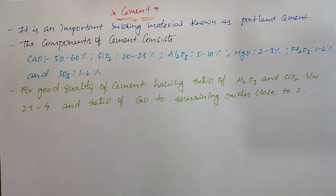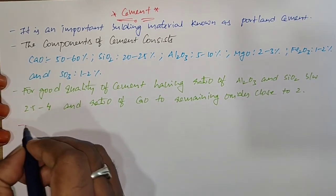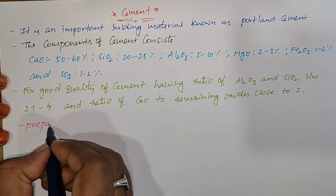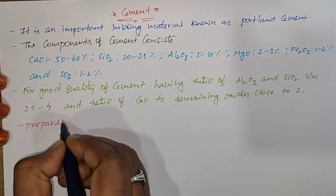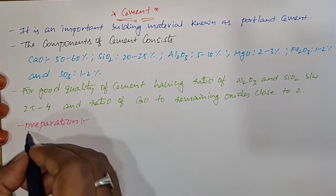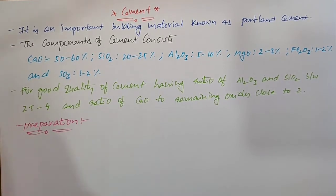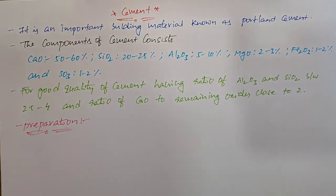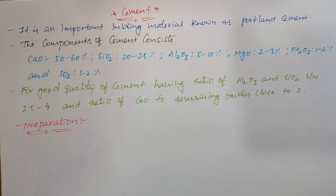We are seeing about how to prepare the Cement. Preparation of Cement: the powdered Limestone and Clay are mixed and the mixture is heated at about 1770 to 1870 Kelvin of temperature. This gives us good quality of Cement.